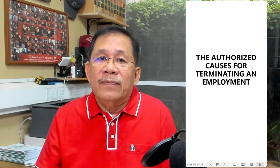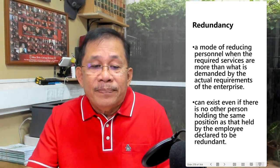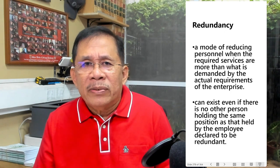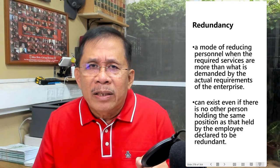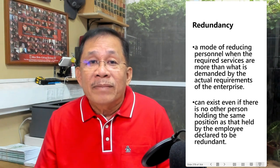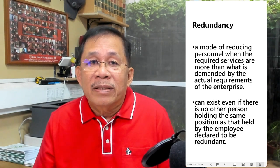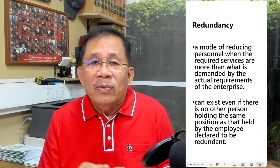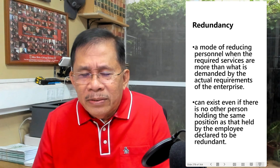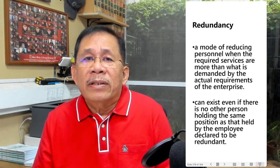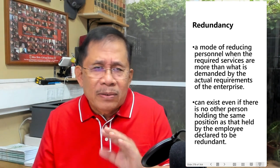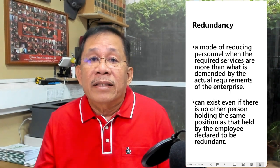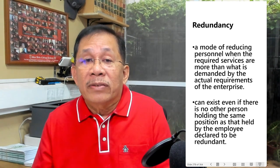Let's go to the authorized causes for terminating unemployment. We have redundancy. This is a mode of reducing personnel when the required services are more than what is demanded by the actual requirements of the business. If there is only one employee who holds the position, redundancy can still exist — even if there is no other person holding the same position as that held by the employee declared to be redundant.